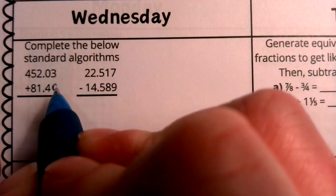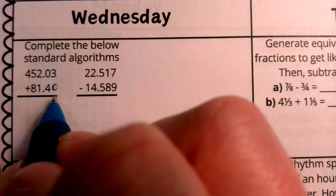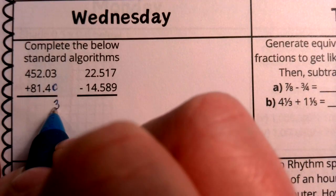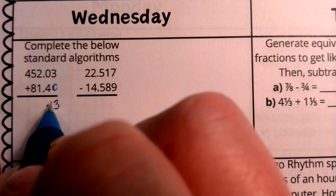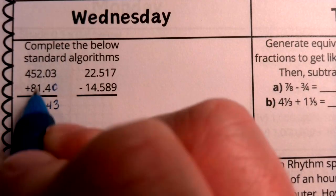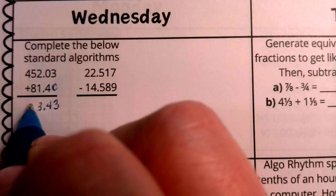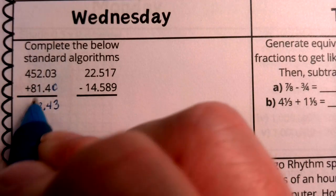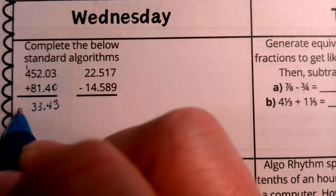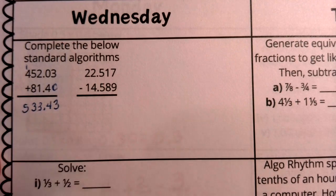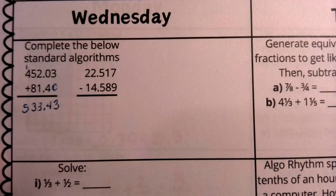We are starting with our hundredths place. 3 plus 0 is 3. 4 plus 0 is 4, decimal. 2 plus 1 is 3. 5 plus 8 is 13. Here is my whole theory. 1 plus 4 is 5. So my answer here is 533 and 4,300.